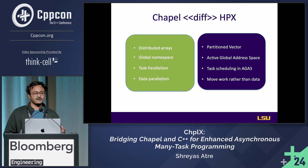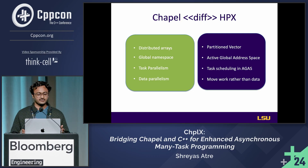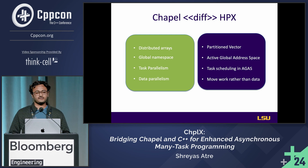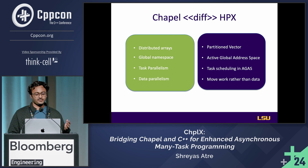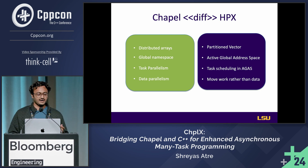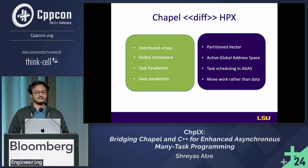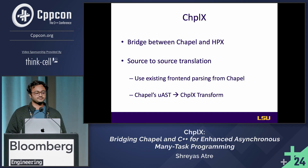Let's look at the difference between Chapel and HPX. In Chapel we have distributed arrays, whereas in HPX we have partition vectors. We have global namespace here and active global address space there. Chapel has task parallelism; HPX has task scheduling in AGAS. For data parallelism, HPX prefers to move work rather than data. So it's not really that different.